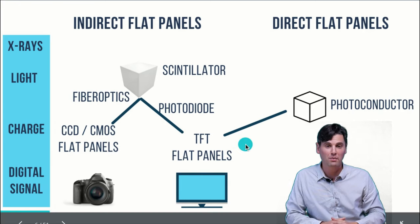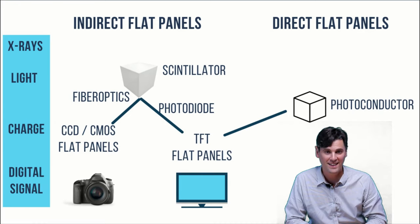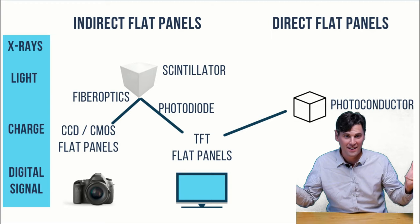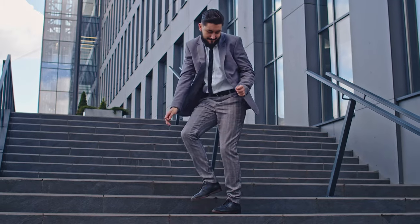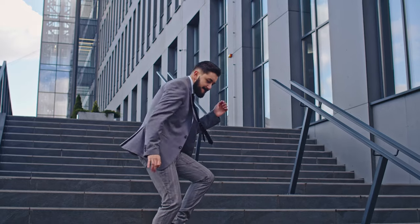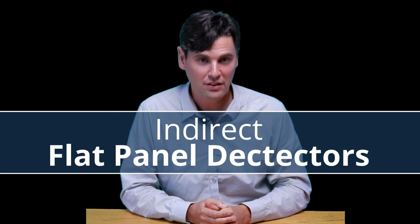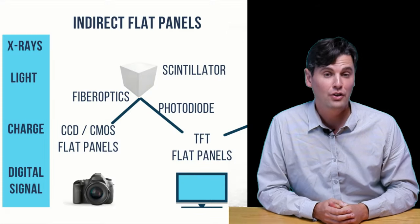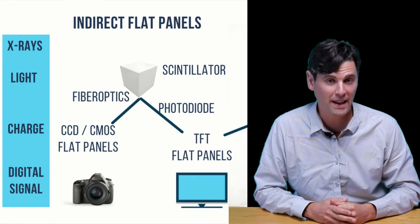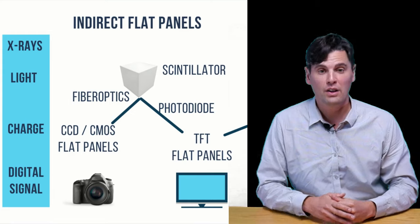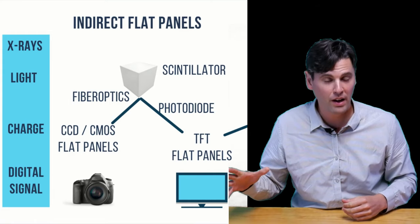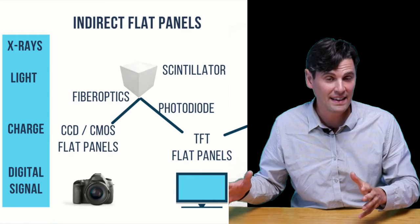Direct versus indirect — those are two different types of flat panels. With direct, you're skipping a step; with indirect, you have an extra step, and that extra step is generating light. We'll cover indirect flat panels first because those are more frequently seen within the clinic. Indirect flat panels also have two different types depending on how they're read out — either a TFT or a CCD.